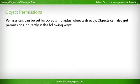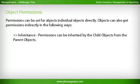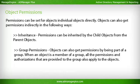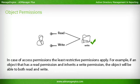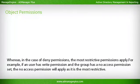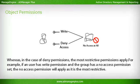Permissions can be set for objects directly, or objects can get permissions indirectly through Inheritance — where child objects inherit permissions from parent objects — or through Group Permissions, where objects get permissions by being part of a group; all permissions granted to the group also apply to the member objects. In the case of access permissions, the least restrictive permissions apply. For example, if an object has read permission and inherits write permission, it will be able to both read and write. However, in the case of deny permissions, the most restrictive permissions apply — if a user has write permission but the group has no access, the no-access permission will apply.